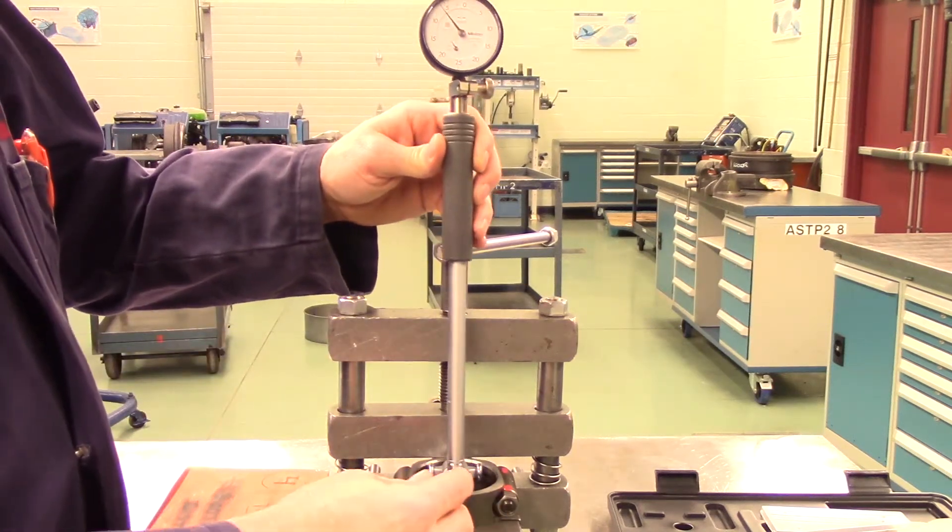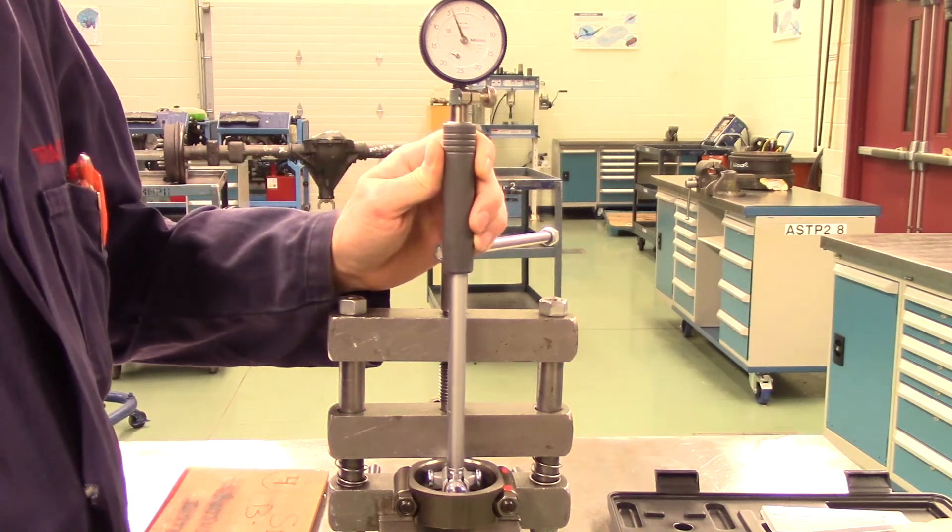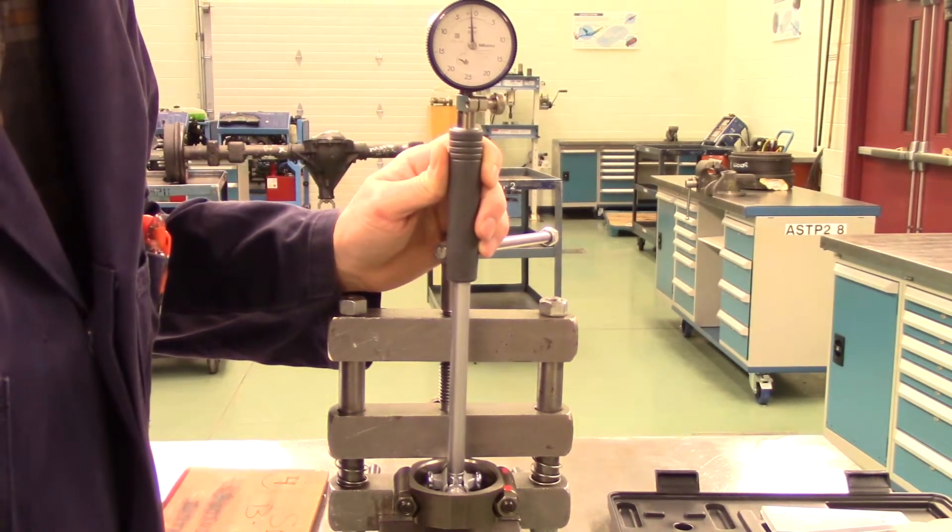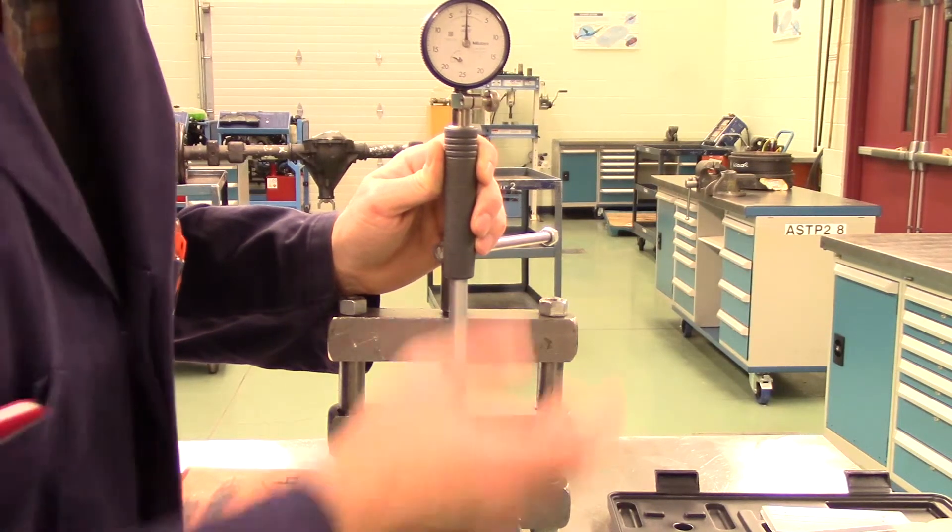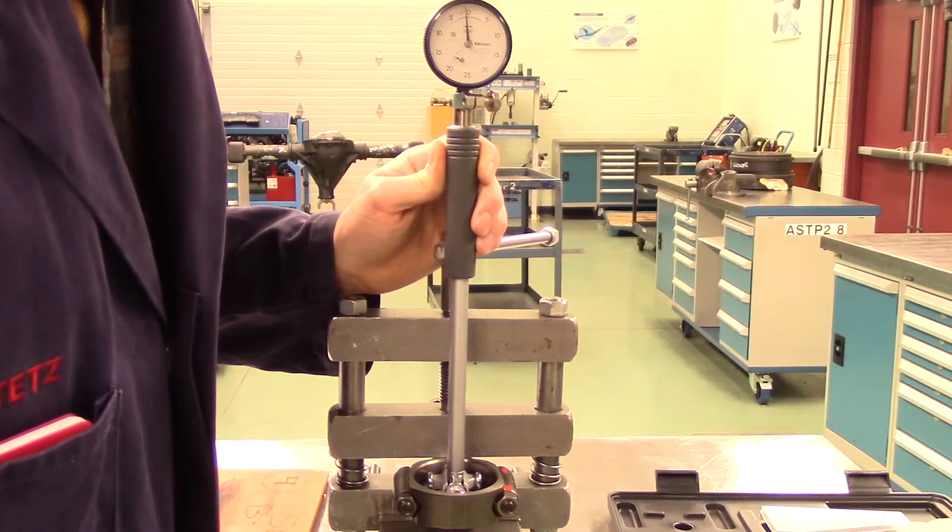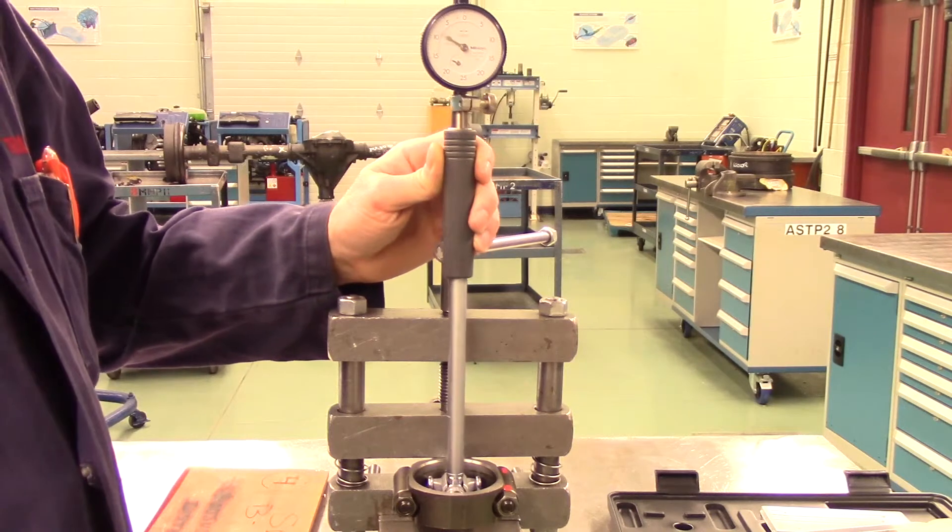Using a dial bore gauge to measure out of round and taper is much simpler. To find out of round or bore taper, we are only comparing certain dimensions to one another. This time we will simply zero the dial bore gauge in the bore that we are currently measuring.